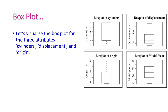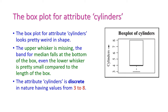The data values beyond the upper or lower whiskers are called outliers. Outliers may deserve special consideration because the values should normally lie inside the minimum to maximum range. Now let us visualize the box plot for the attributes: cylinders, displacement, origin, and model year.